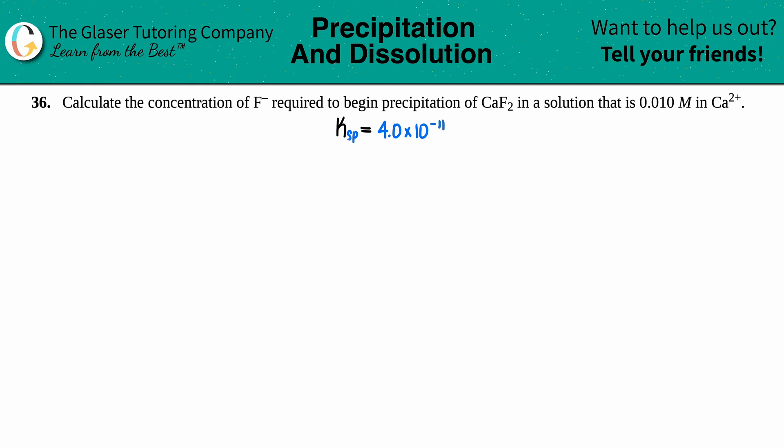Number 36: Calculate the concentration of the fluoride ion F⁻ required to begin precipitation of calcium fluoride CaF₂ in a solution that is 0.01 molarity in the calcium ion Ca²⁺. Okay, so we're talking about precipitation, right? We're making a solid. That's what precipitation is—just making a solid of a compound.